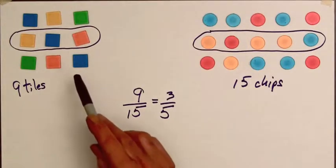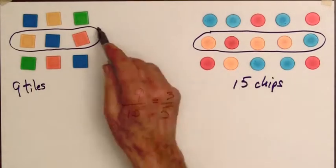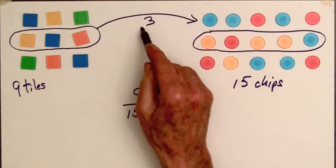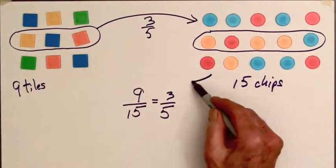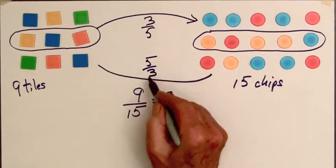Notice that in comparing two sets, it is very important which set is mentioned first. The ratio of the number of tiles to the number of chips is 3 fifths, and the ratio of the number of chips to the number of tiles is 5 thirds.